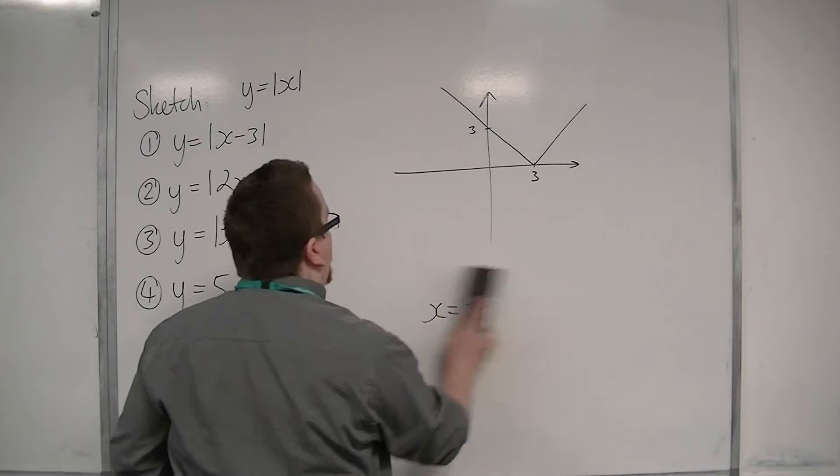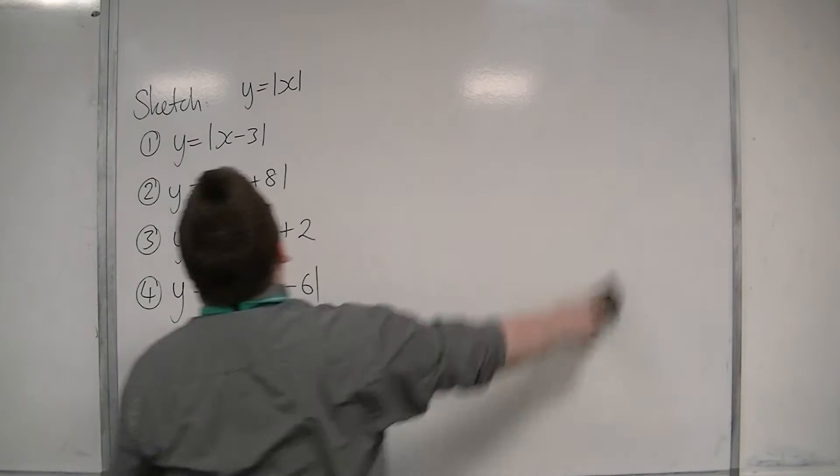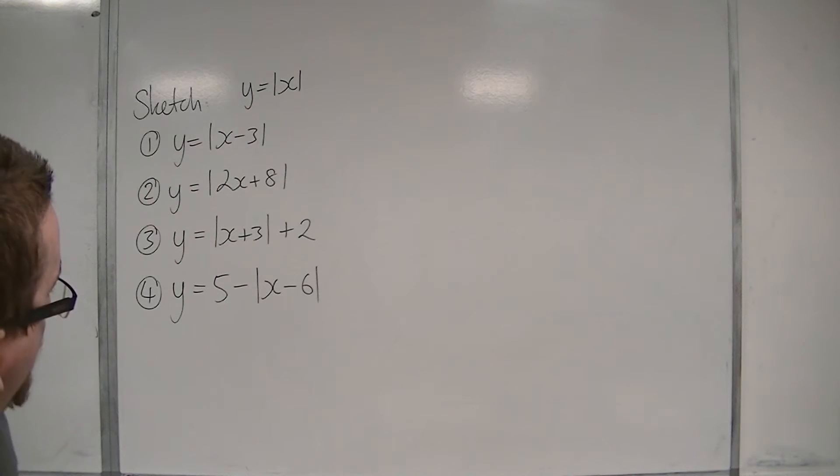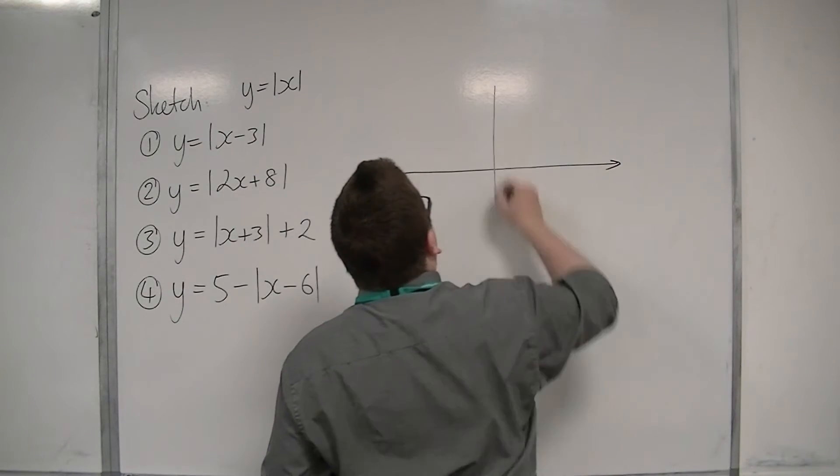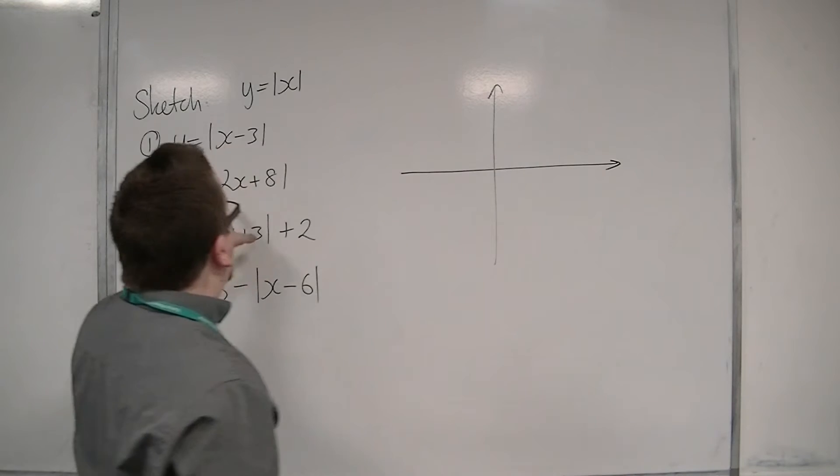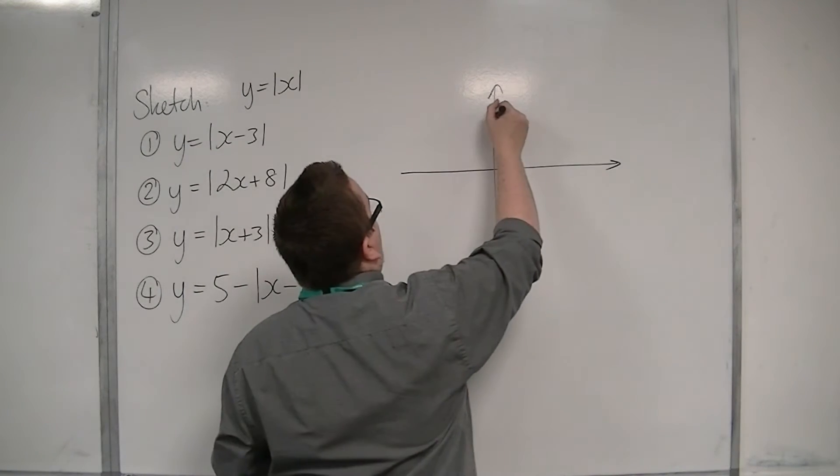So let's look at the next one: y equals mod negative 2x plus 8. We can use similar techniques. When x is zero, we're going to get modulus of eight, so it goes through eight.